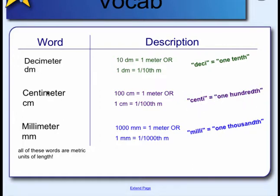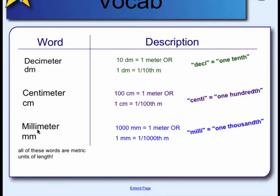Finally, millimeter. 1000 millimeters is what you'll find in one meter — that's a lot. Or one millimeter is equal to one one-thousandth of a meter. Do you hear me saying thousandth, hundredth, tenth? We're working with decimals. 'Milli' means one-thousandth, so millimeter means one-thousandth of a meter. I always think of a millipede when I see the word millimeter because they have a ton of legs.